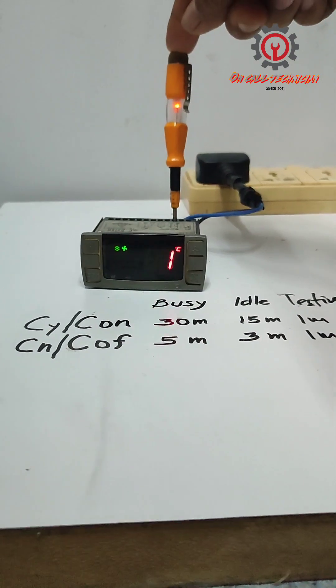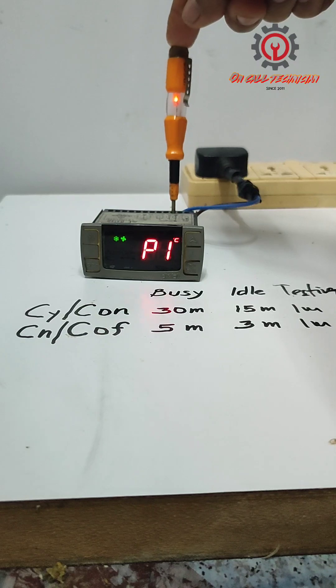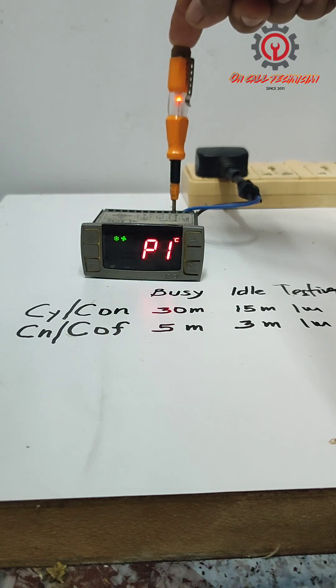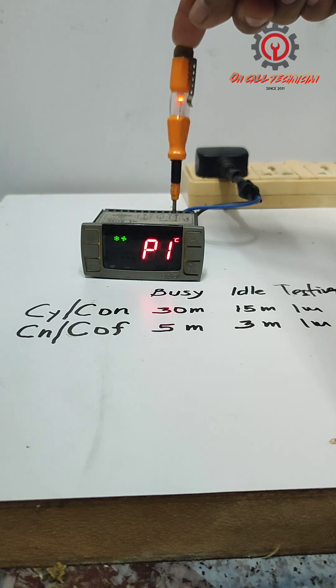Hindi ko ito pabilisin para makita nyo guys na at one minute is magka cut off ito. Ang setting ko sa CY at saka CN ay one minute lamang para makita nyo na meron tayong cut in at cut off kahit wala tayong sensor.